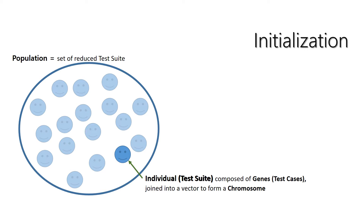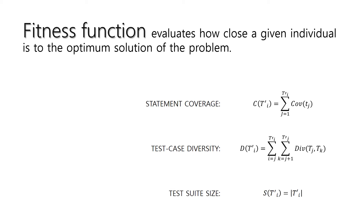In our approach, each individual is a reduced test suite randomly selected among all of those possible. The fitness function allows to assign a score to each solution in order to evaluate how close the solution is to the optimal one.